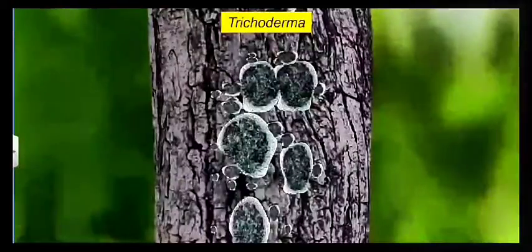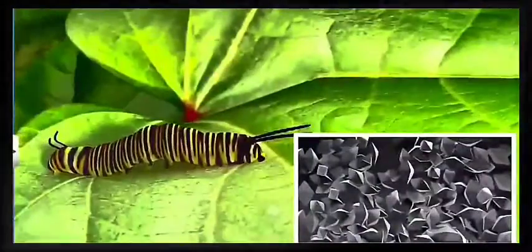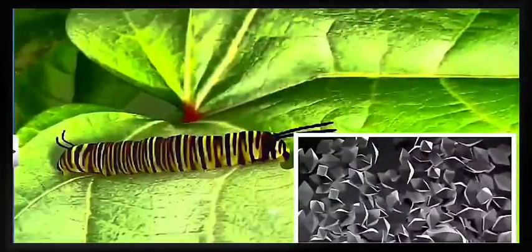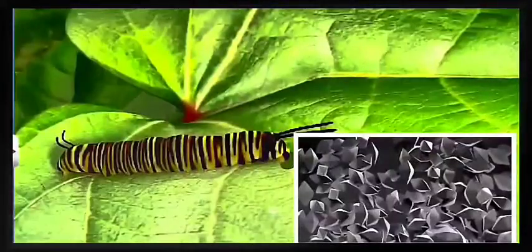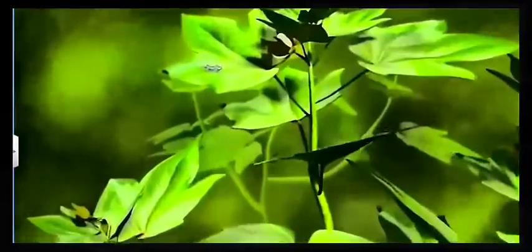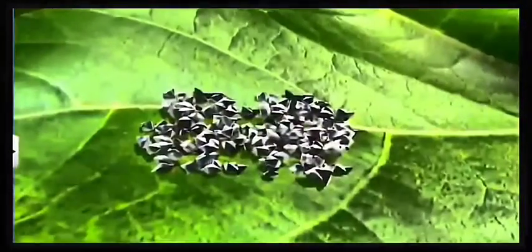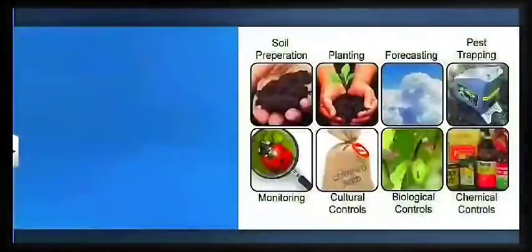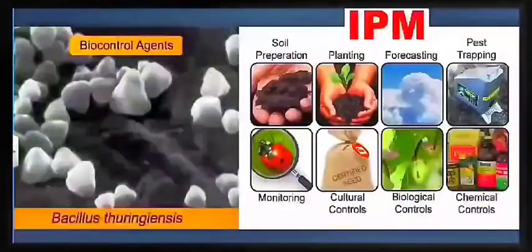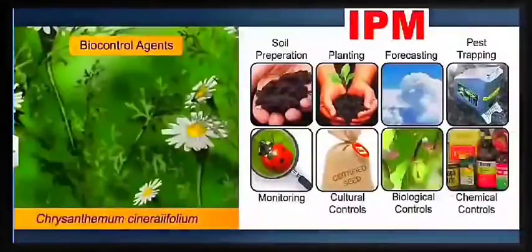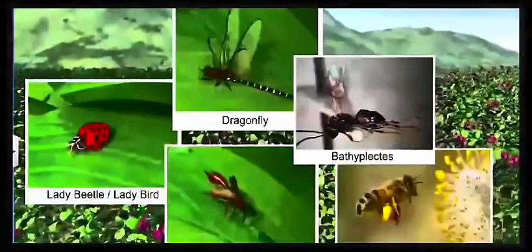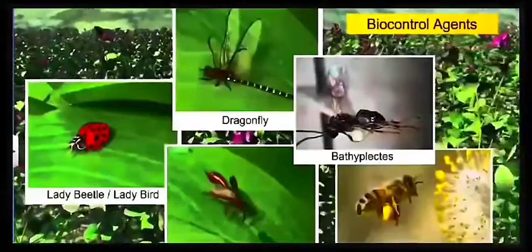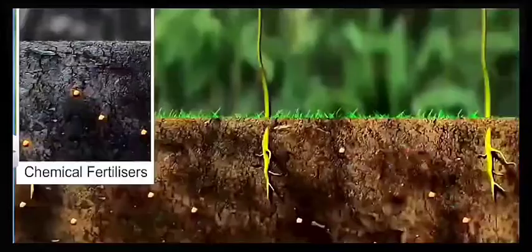Another good example is Trichoderma. It is a fungus that also protects our crops from harmful insects. Similarly, there is a virus called baculovirus — specifically the species nucleopolyhedrovirus. These are species-specific for certain harmful insects; they kill only those harmful insects and are non-toxic to other useful insects, other animals, and plants. So all these microbes, along with useful insects, come under biocontrol agents and integrated pest management.